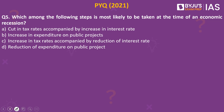Now let's look into the next practice question. Which among the following steps is most likely to be taken at the time of an economic recession? Options: cut in tax rates accompanied by increase in interest rate; increase in expenditure on public projects; increase in tax rates accompanied by reduction of interest rate; or reduction of expenditure on public projects. The answer is increase in expenditure on public projects. Whenever there is recession, the government starts pumping in money, providing economic stimulus, and spending on public projects. This is a previous year question from 2021.